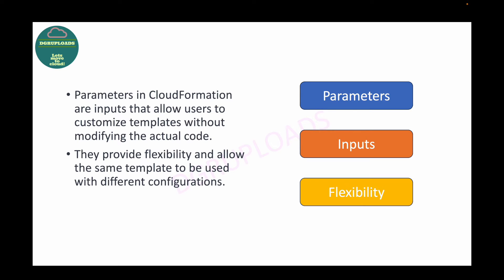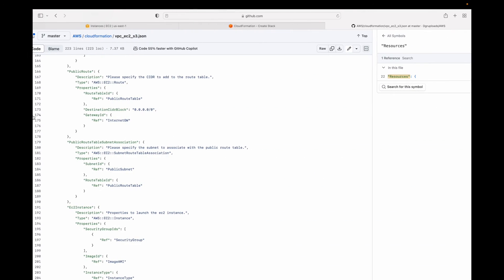For example, say you have two projects — Project A running in VPC1 and Project B running in VPC2. Instead of creating two different CloudFormation templates, you can have one common template for both projects and use parameters to get input from the user. When Project 1 people execute the code they provide VPC1, and when Project 2 people execute it they provide VPC2 as their network.